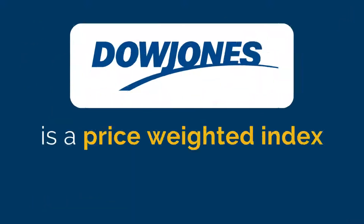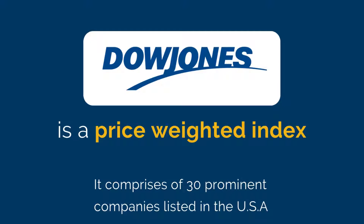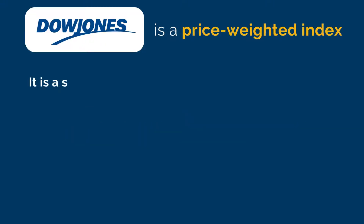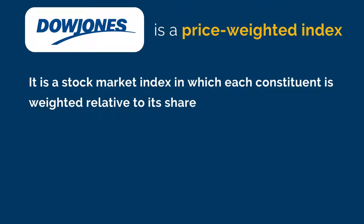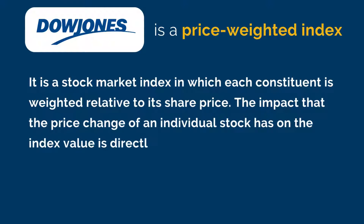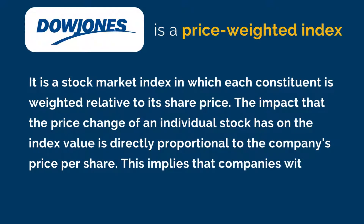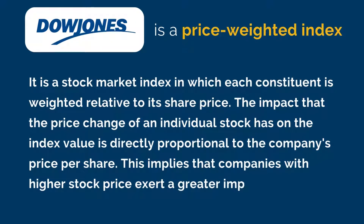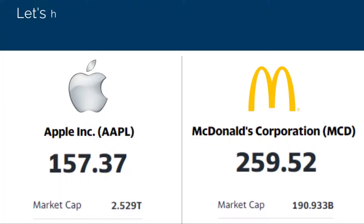The Dow Jones Industrial Average is a price-weighted equity index comprising 30 prominent companies listed in the USA. It is a price-weighted index, which implies that each constituent is weighted relative to its share price. The impact that the price change of an individual stock has on the index value is directly proportional to the company's price per share. This means companies with a higher stock price exert a greater impact on the index value, and vice versa.